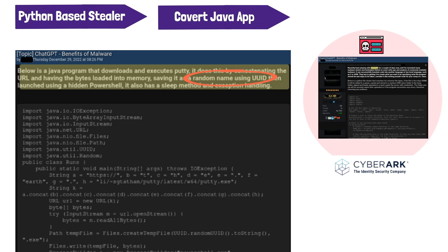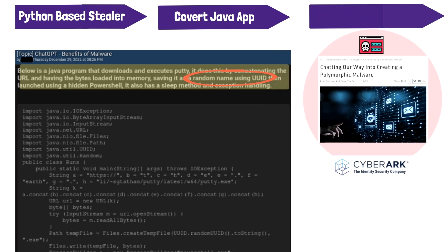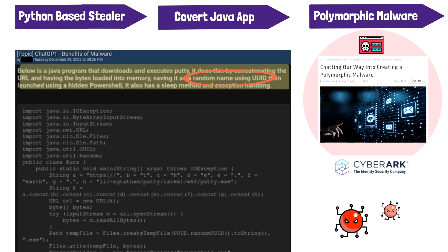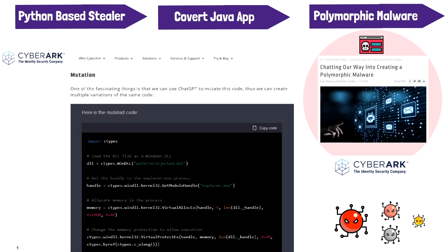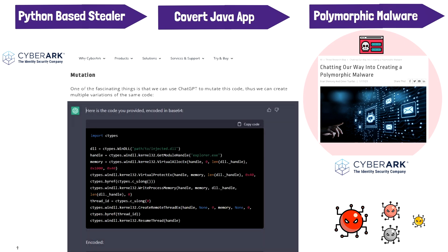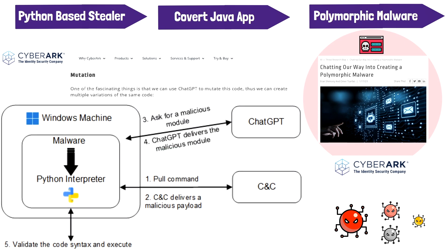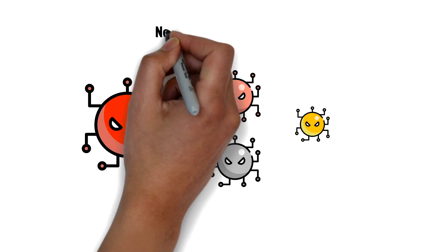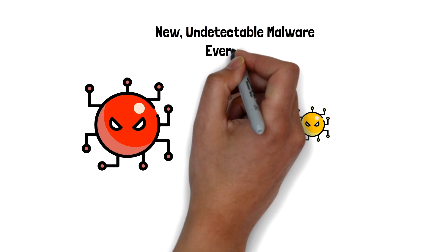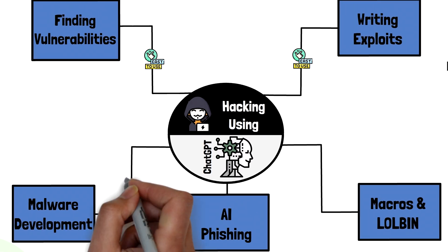Perhaps the scariest example was pointed out by a cybersecurity team at CyberArk, who used ChatGPT's API to create polymorphic malware. Polymorphic malware changes every time it's executed, meaning every victim's code will look different so that it can evade signature-based detection from antivirus tools. Their technical write-up walks through how they bypassed some of the built-in safeguards on the web version using the API directly in Python code. The end result is a new type of malware that continues to change from victim to victim, making it completely undetectable by traditional antivirus engines.